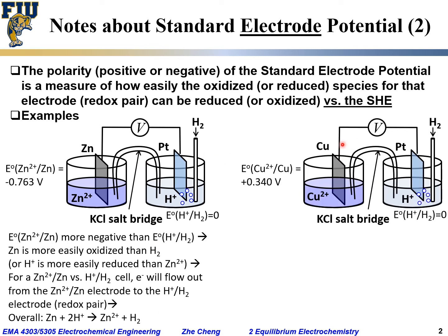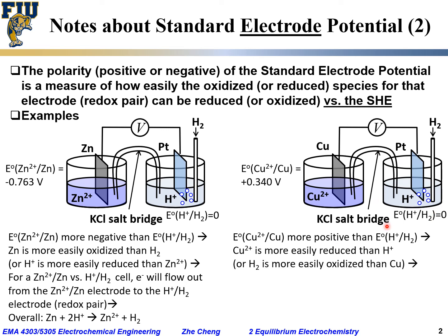In comparison, if we construct another electrochemical cell with copper 2+ / copper versus the same standard hydrogen electrode, the standard electrode potential for copper 2+ / copper is positive 0.340 V, while the SHE is of course zero. Here, the standard electrode potential for copper 2+ is more positive than the SHE, which means copper 2+ is more easily reduced than the proton, or equivalently, hydrogen is more easily oxidized than copper.